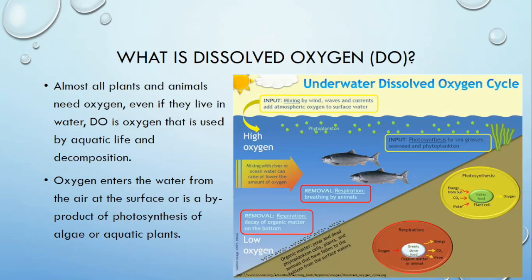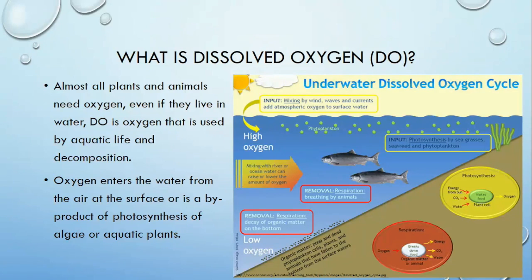So what is dissolved oxygen and why is it important? Abbreviated as DO, it is simply oxygen dissolved in water. Almost all plants and animals and many biological processes need oxygen, and this includes organisms that live in water as well as decomposition that occurs underwater. Oxygen enters from the air at the surface of the water, or it is created as a byproduct of photosynthesis in aquatic plants and algae.